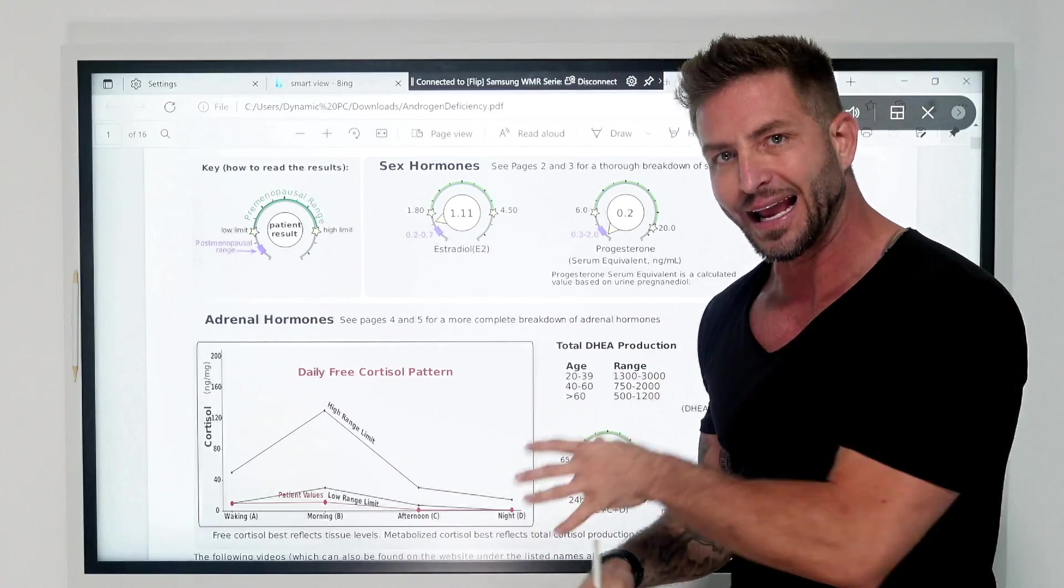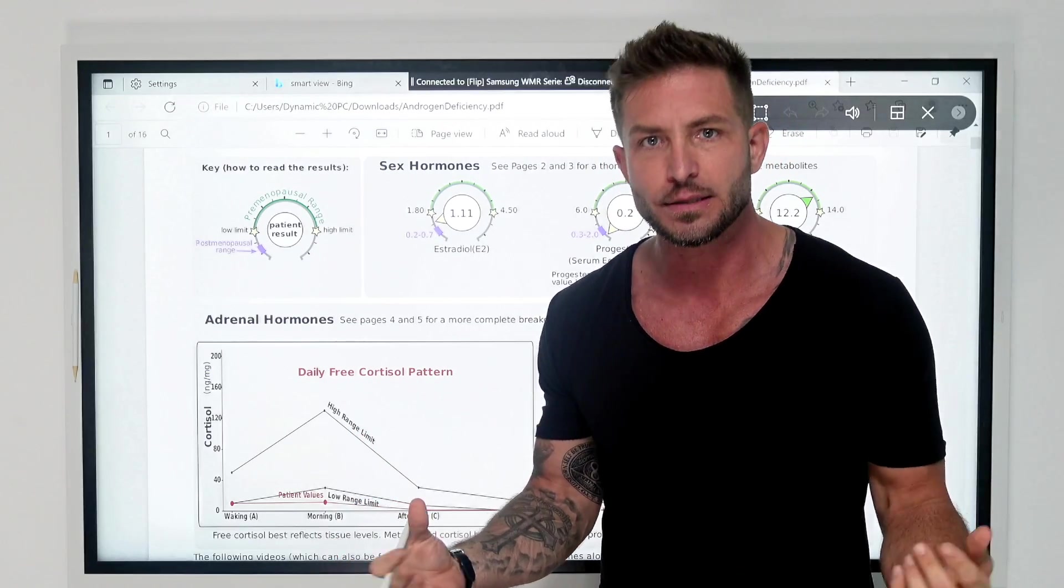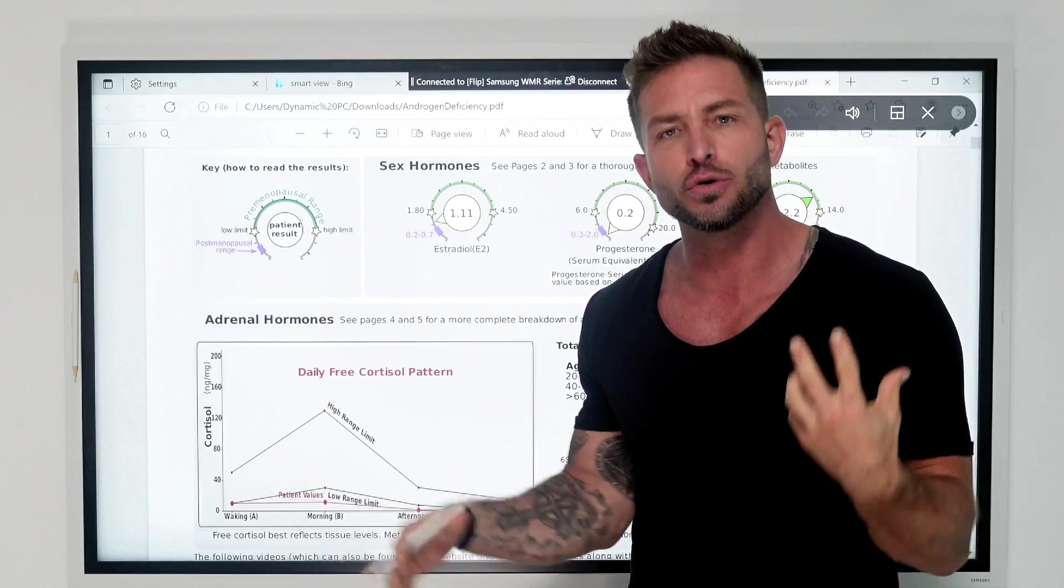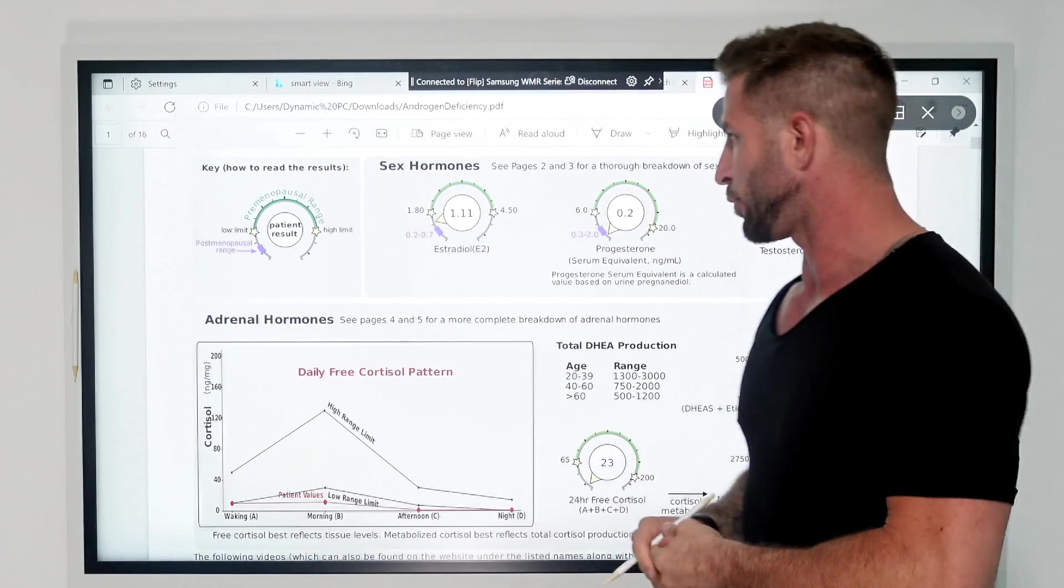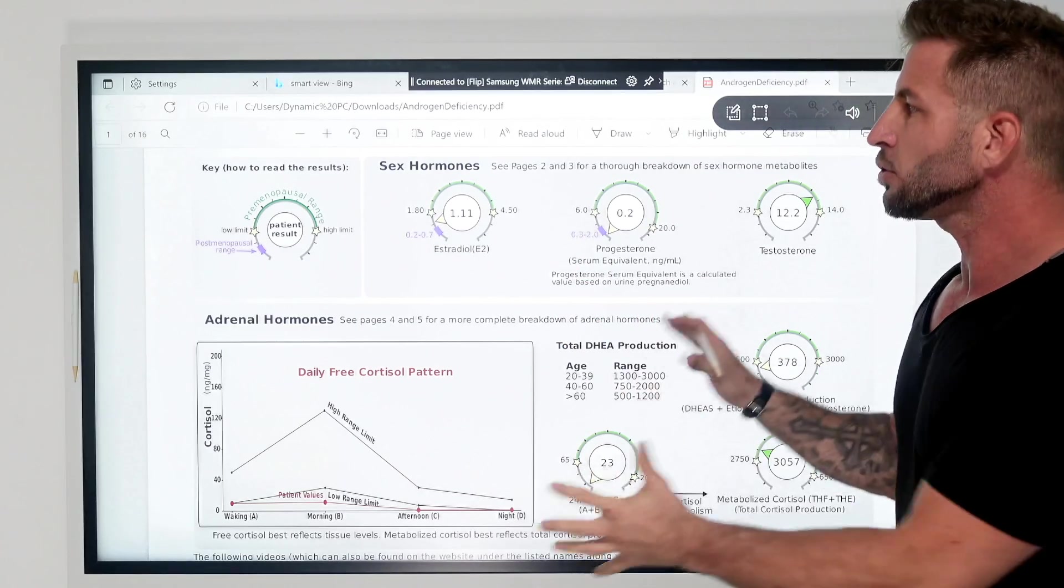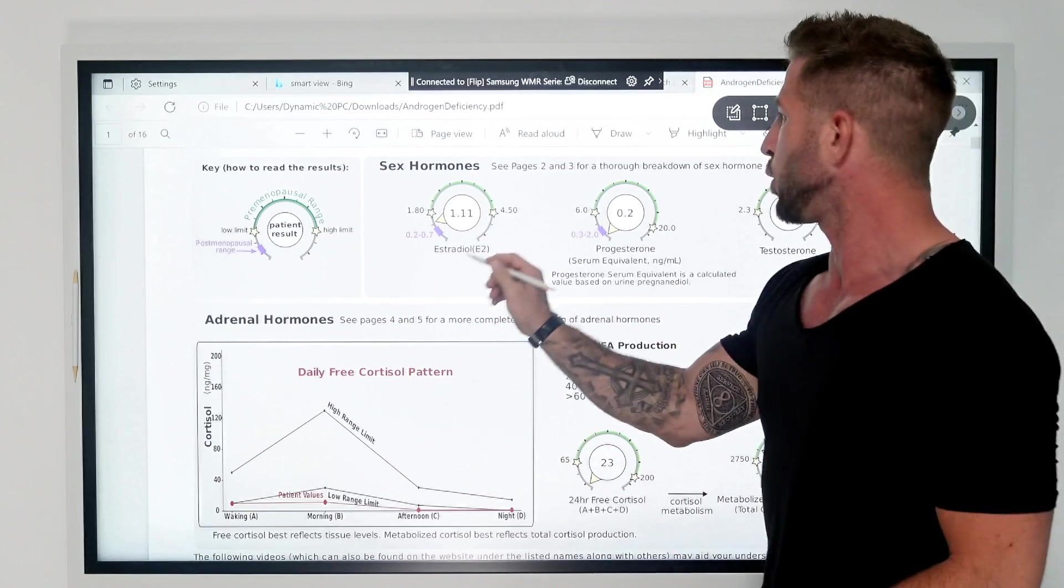Let me explain. This test is going to identify androgen deficiency in women. Women may not realize to look for this, but as they diet, they're beginning to lose muscle, and they don't know why. So in this test, let me give you an example. We'll call this Mrs. Jones, okay?